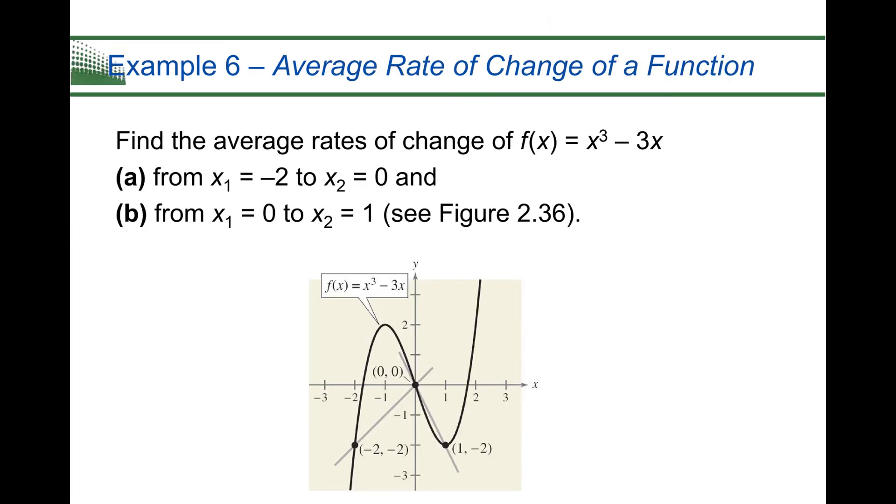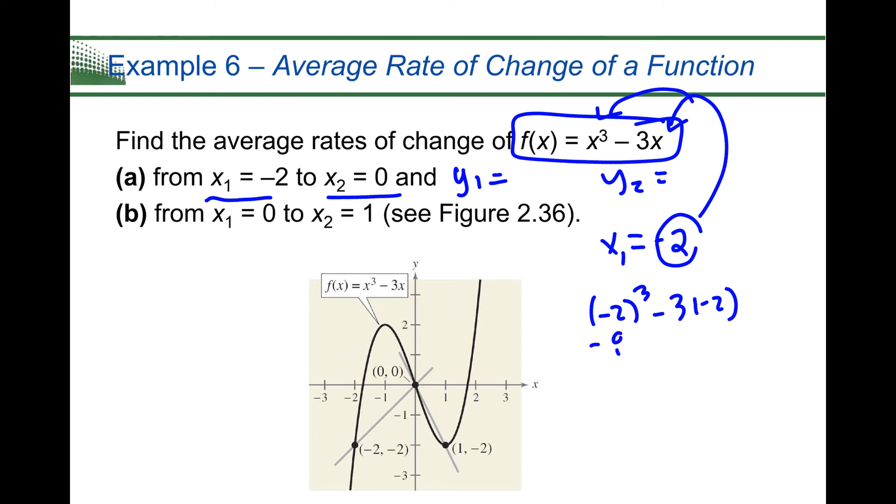So I'm going to find the average rates of change of this given function here. Now we are going to have an added step. They've only given me x values, so I need to find my y values. In order to find my y value, I'm going to have to plug it in. So notice if my x1 is equal to negative 2, I'm going to have to take that negative 2 and plug it into my x's here. So that would be negative 2 cubed minus 3 times negative 2. Well, negative 2 cubed, that's a negative 8. Be careful with your parentheses. Negative 3 and negative 2, that's a positive 6. So I get negative 2 from my y value. So I can put that here.